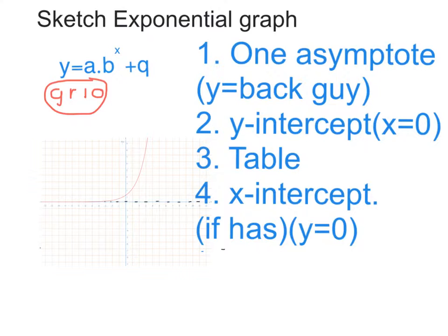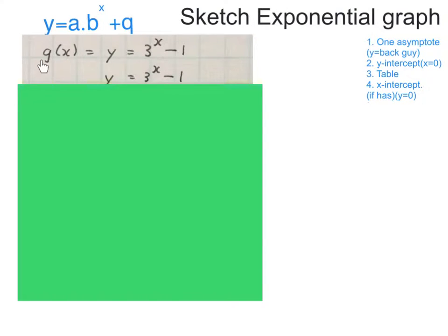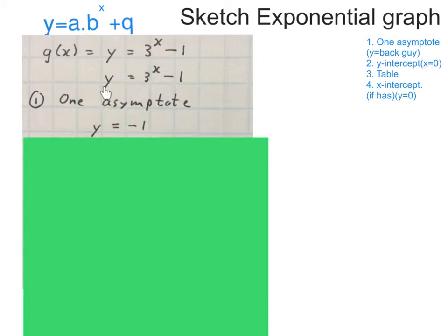So here is our equation: g(x) = y = 3^x - 1. Look at my formula, yes it looks fine, so I just write y = 3^x - 1. The first thing I work out is my one asymptote, y equals q. In this case, the asymptote is y = -1.